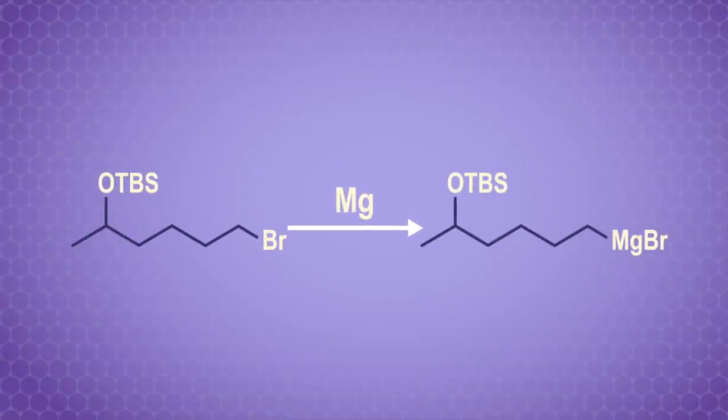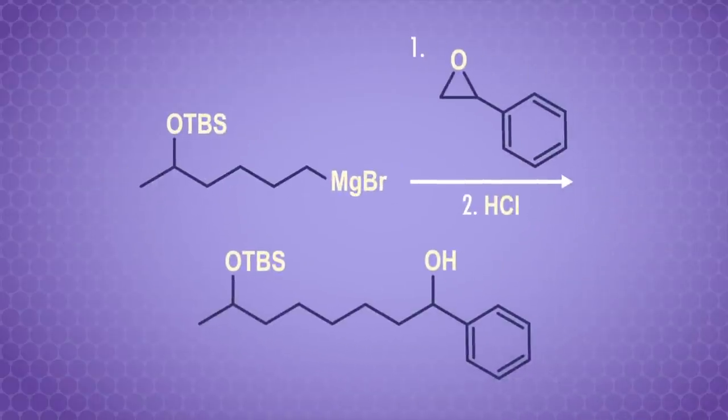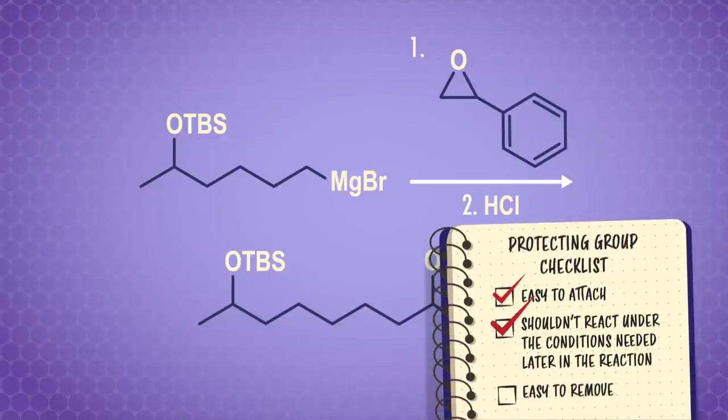Now we can form a Grignard by reacting with magnesium. Our protecting group is disguising the alcohol, preventing those acid-base reactions we don't want. So not reacting under the conditions of the reaction? Check. This means we can go ahead and form the product we want by reacting with this epoxide. Again, the protecting group remains unchanged during this reaction, so double-check to that second box.